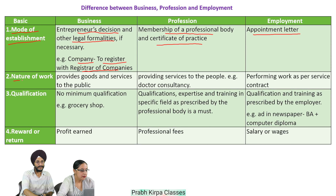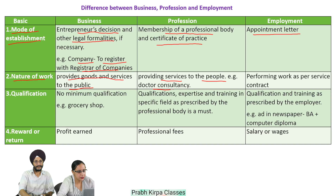Number 2: Nature of Work. Business provides goods and services to the public. Professionals provide services to the people, for example, doctor consultancy. Employees have to perform work as per the service contract.